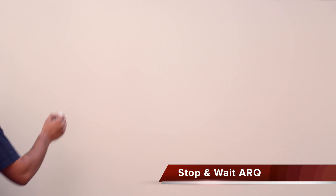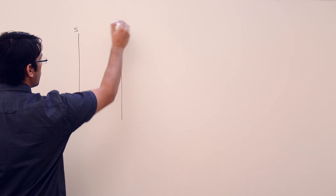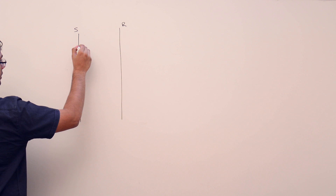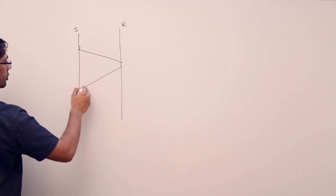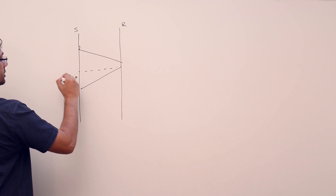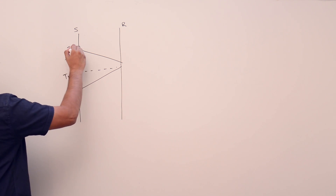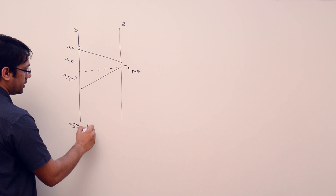Let us discuss what is the problem with the stop and wait protocol. We know the stop and wait protocol: the sender transmits a data packet, propagates it, and then waits for acknowledgement from the receiver. There is propagation time and transmission time of data, and also transmission time of acknowledgement. This is the simple stop and wait protocol.